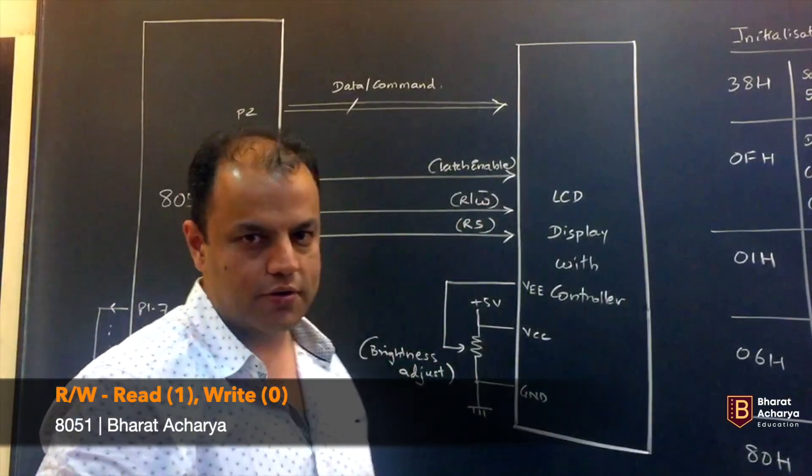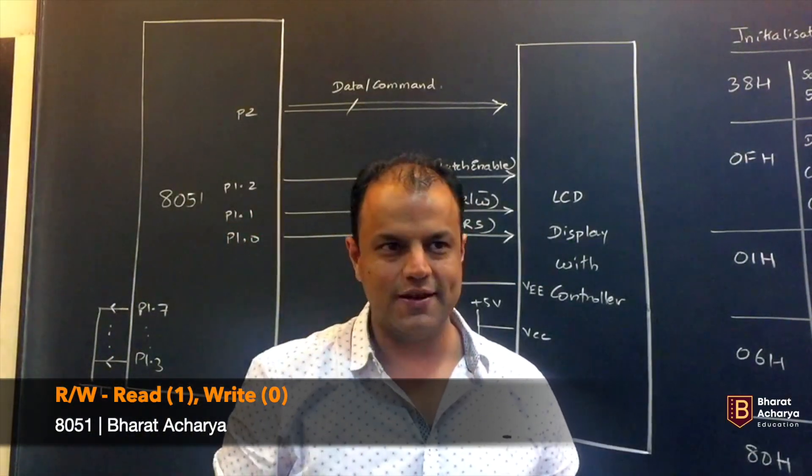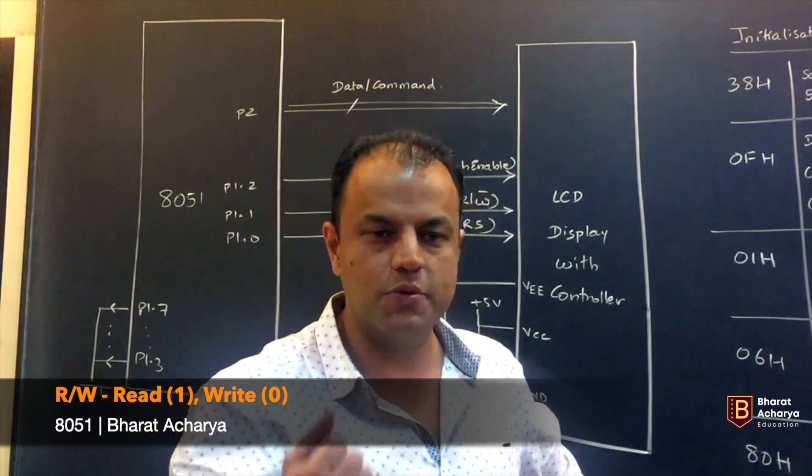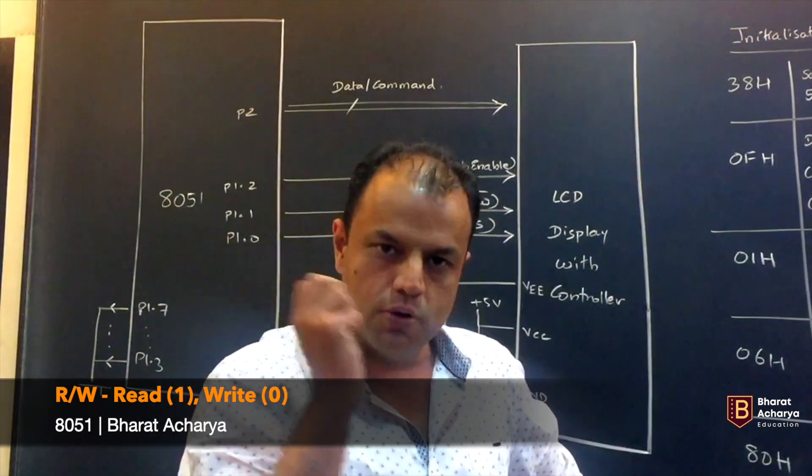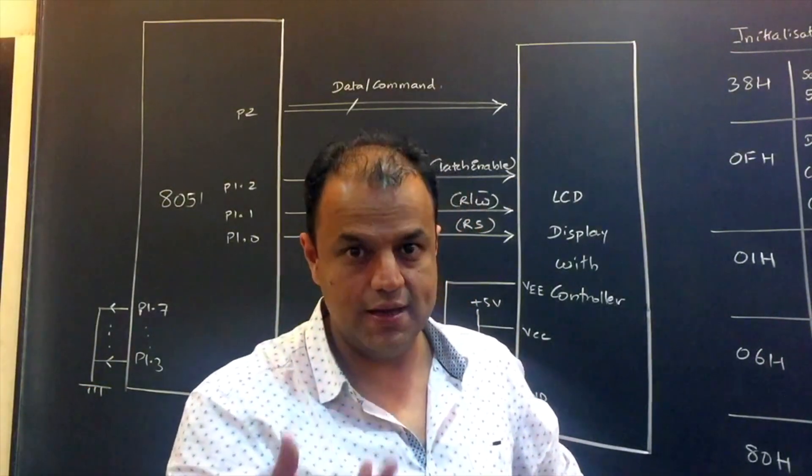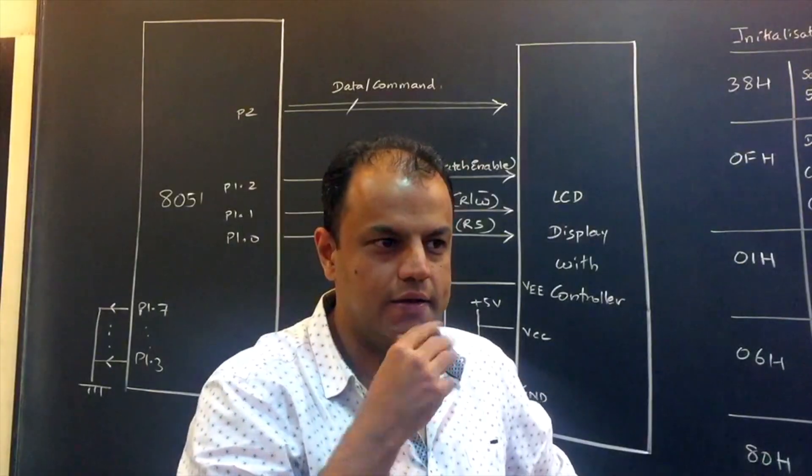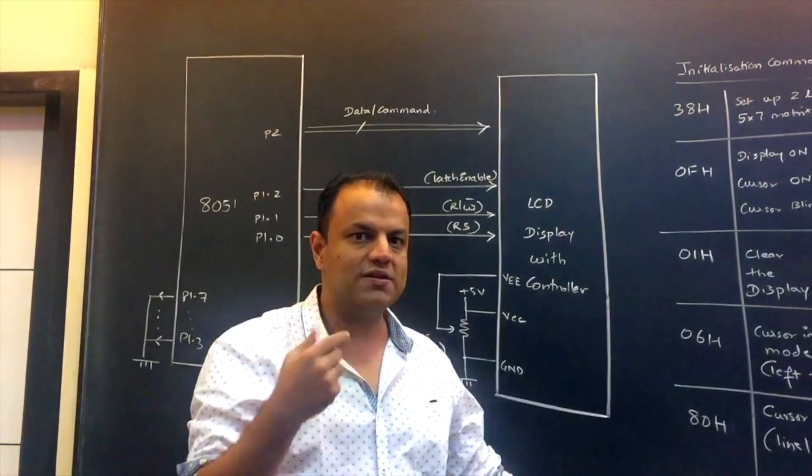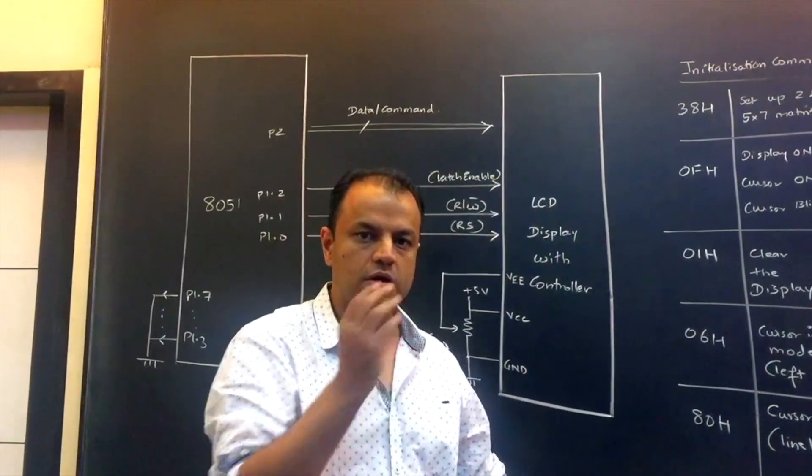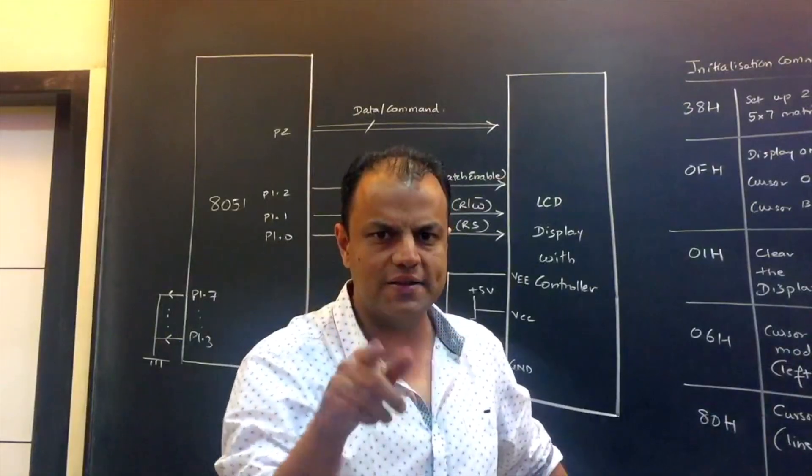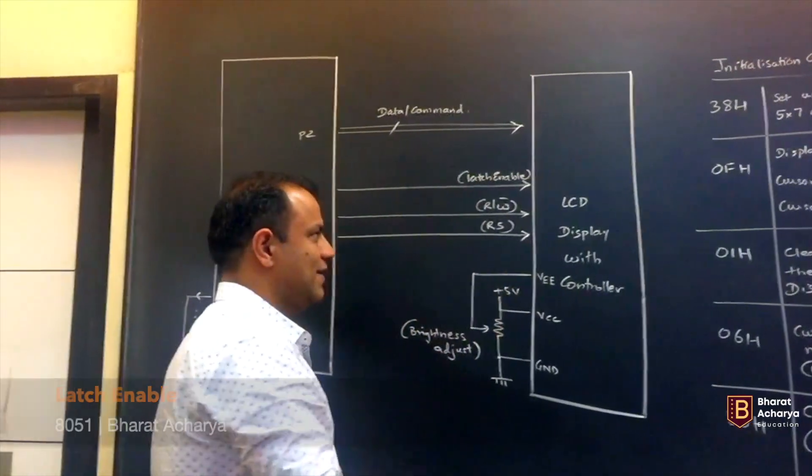R slash W bar. Read or write. 1 means read, 0 means write. I'm sure you're wondering if it's a display, obviously we're just going to write. Why would you want to read? You are absolutely correct. But if you want, you can also read back what you had given, especially commands. We won't do it in our program, but I'm just telling you why that signal is there. We will always keep the signal 0. We will always be writing.